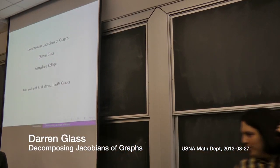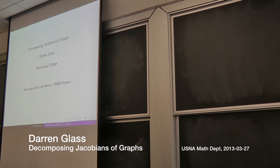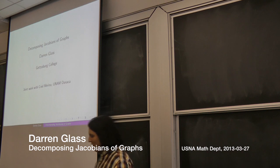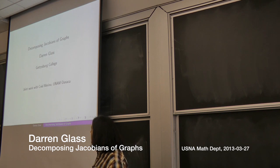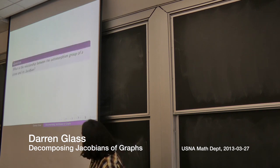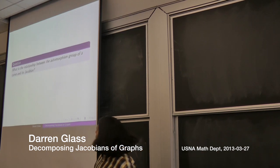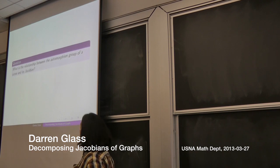It's our pleasure to have Darren Glass from Gettysburg College. He's going to talk to us about decomposing the Jacobians of graphs. A lot of his research has been interested in the question: what is the relationship between the automorphism group of a curve and its Jacobian?